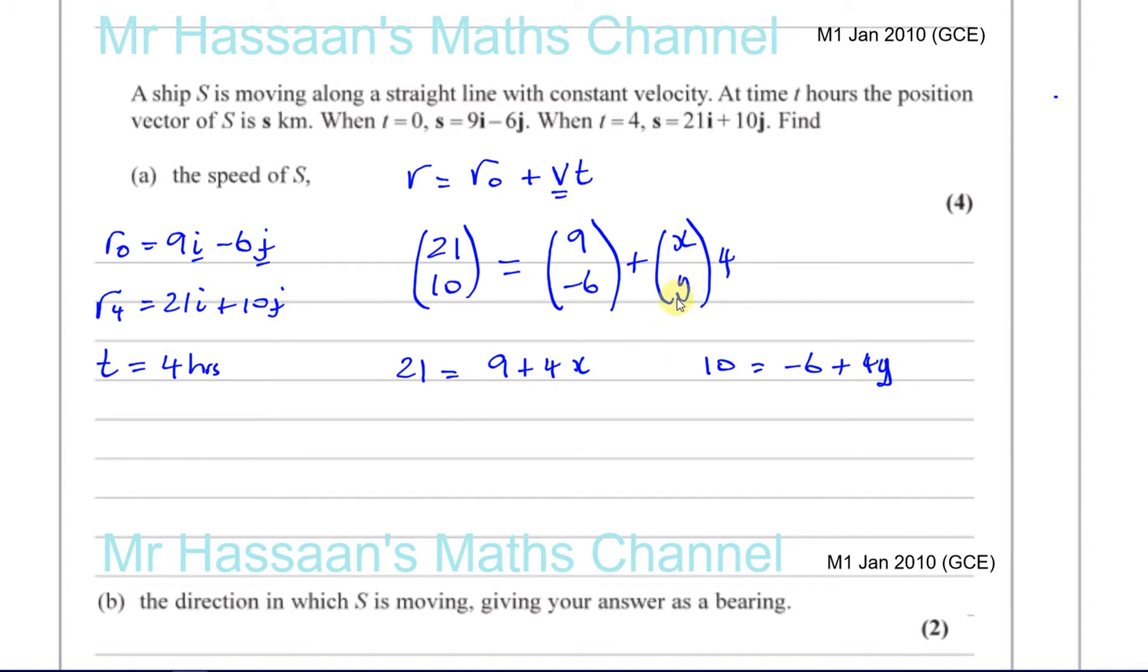Here we're going to have 21 minus 9, which is 12, equals 4x, so I can say x is equal to 3. That's going to be the i component. And we can say 16 is equal to 4y, so y is equal to 4. 16 divided by 4. So that's the j component.